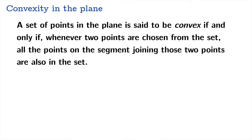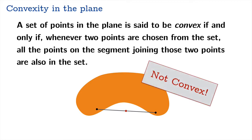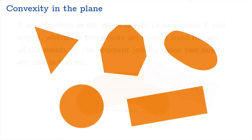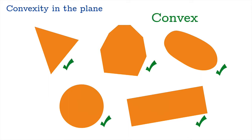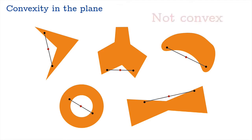What would it mean for a set not to be convex? It would just require you to find two points for which the segment joining them contains another point not in the original set. If you look at five shapes that are all convex, a moment's thought confirms this. And for another five shapes, you can imagine choosing the right points to exhibit a counterexample of the convexity definition — so none of them are convex.